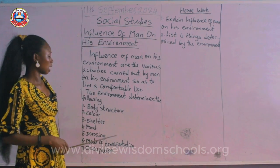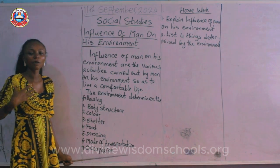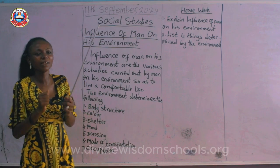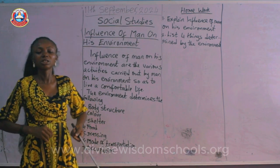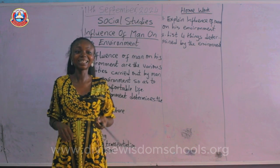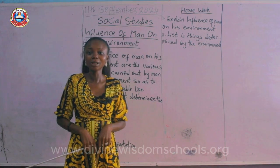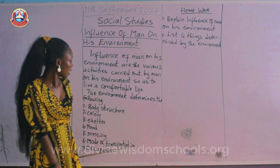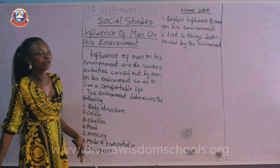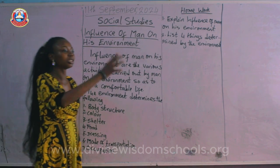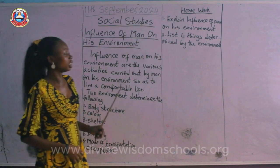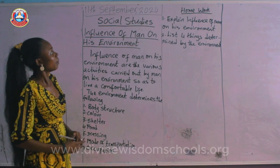Number five is dressing. The environment determines the type of clothes people wear. Those in very cold environments, like plateau regions, wear clothes that cover their whole body because of the weather. Their mode of transportation also differs — those in riverine areas use canoes. And occupation: those in forested areas go into farming and hunting because of the vegetation around them.